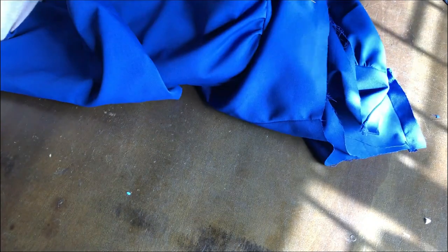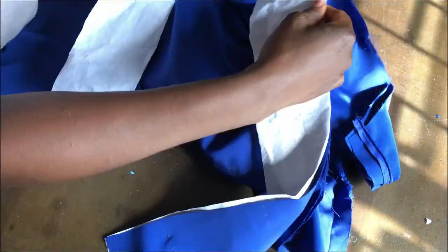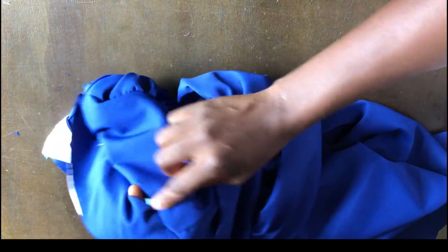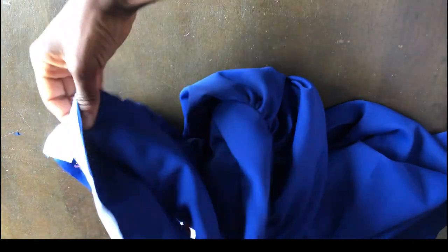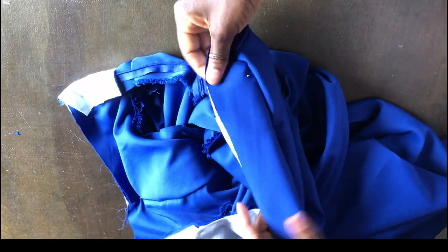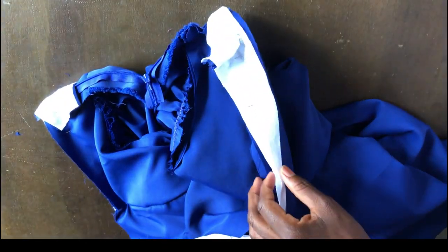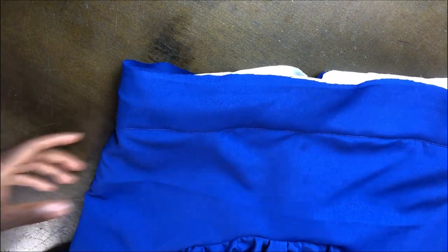Next, iron stay tape onto the band, pin it to the skirt and sew. After sewing, make sure to turn it over and backstitch. This is something else that you do that makes your garment look very well sewn and professional.